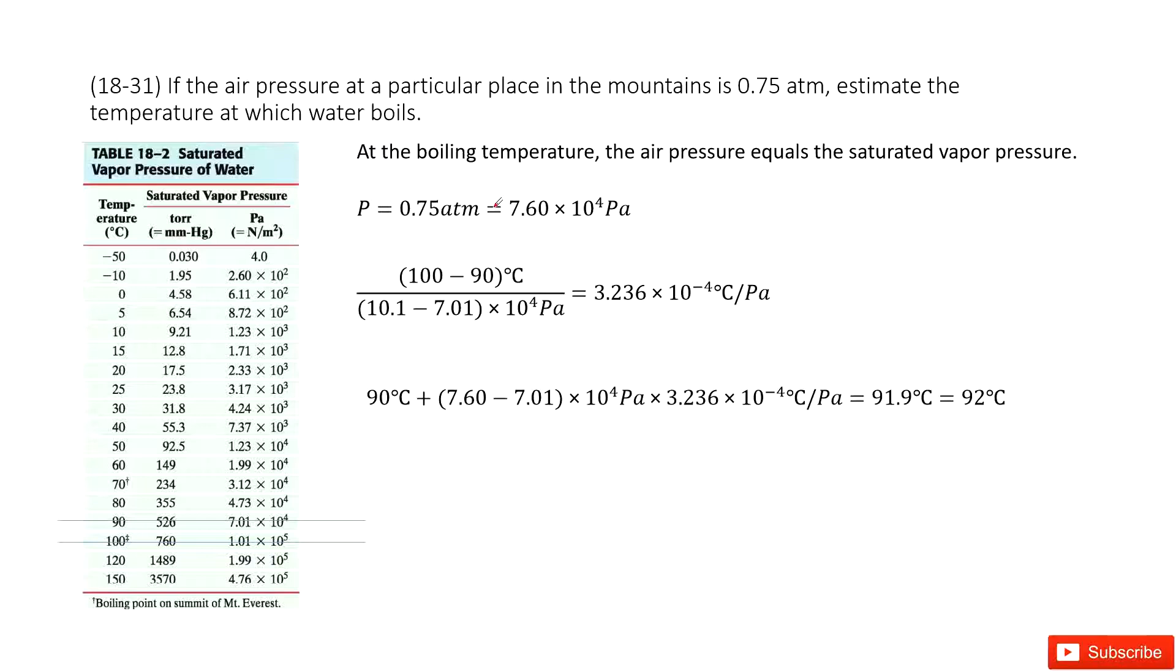Chapter 18 is about kinetic energy of gases. We know the air pressure at the top of the mountain is 0.75 atm. We need to find the temperature at which water boils.